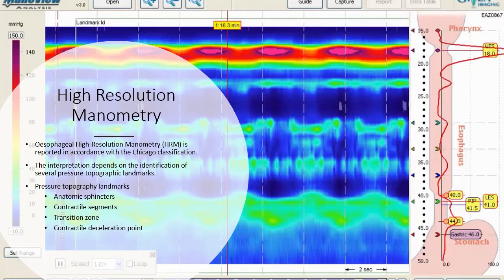Esophageal high-resolution manometry is reported in accordance with the Chicago classification. The interpretation depends on the identification of several pressure topographic landmarks.